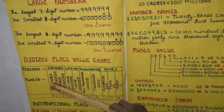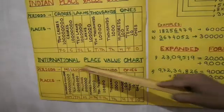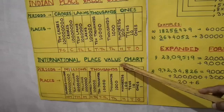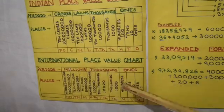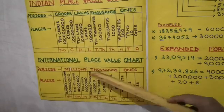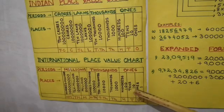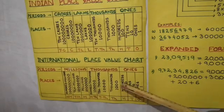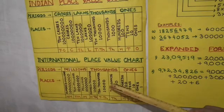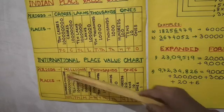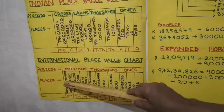In the international place value system we have three periods: ones, thousands, and millions. The ones period has three places: ones, tens, hundreds. The thousands period has three places: thousands, ten thousands, and hundred thousands. The millions period has three places: millions, ten millions, and hundred millions.